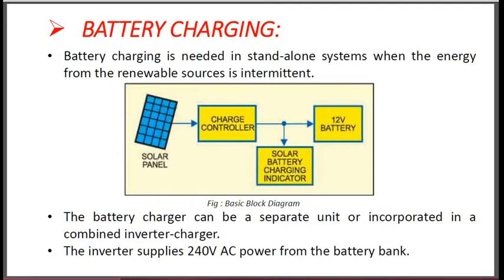Battery Charging is needed in stand-alone systems when the energy from the renewable sources is intermittent. When the renewable energy sources are not continuous or constant, then we have to use Solar Battery Charging System for charging the battery and store the energy, and utilize it when the renewable source is absent. The battery charger can be a separate unit or incorporated in a combined inverter charger. The inverter supplies 240W AC power from the battery bank.